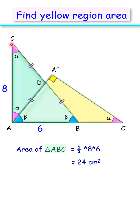Here, AD is acting as a median which divides it into two equal areas. So this area will be 12 and this area will be 12.